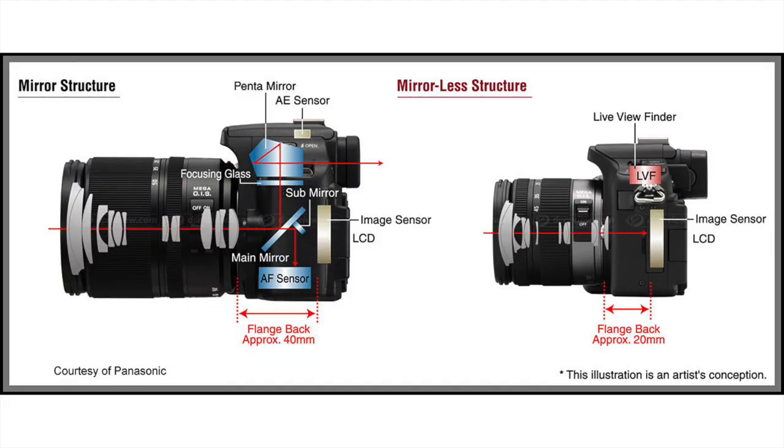What is the mirrorless camera? In a DSLR camera, one important part is the mirror. Light comes through the lens, reflects off the mirror, and allows you to see the subject. In a mirrorless camera, there is no mirror — light comes through the lens and directly hits the sensor. The shutter curtain stays always open, so you can see the image directly from the sensor.